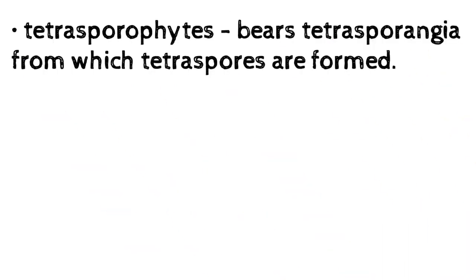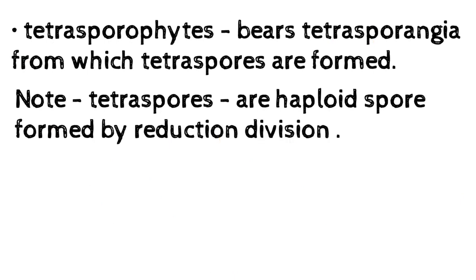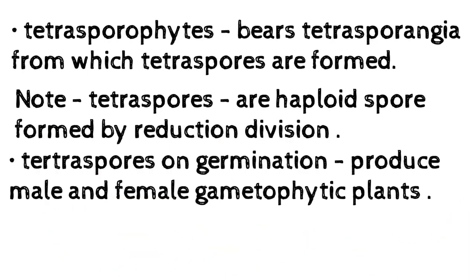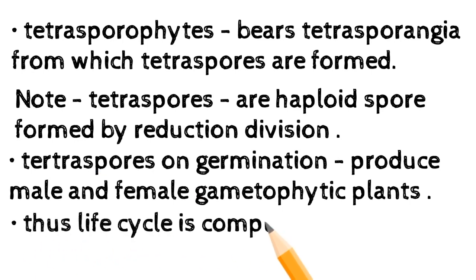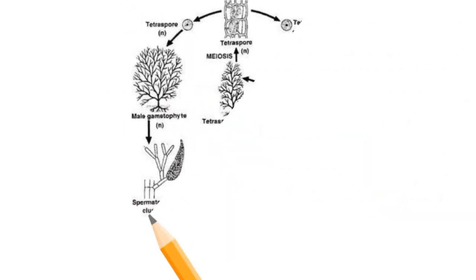Post-fertilization events: carpospores from the carposporophyte germinate into diploid tetrasporophytic plants. Tetrasporophytes bear tetrasporangia, from which tetraspores are formed. Note: tetraspores are haploid spores formed by reduction division. On germination, tetraspores produce male and female gametophytic plants, thus completing the life cycle.